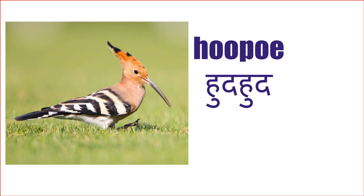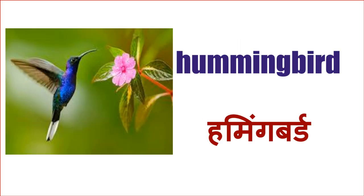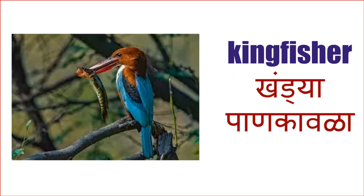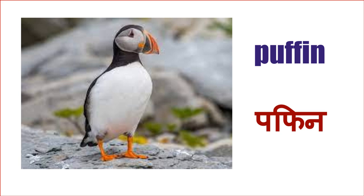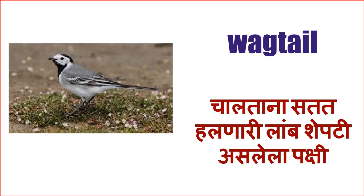Hoopoe - Yala Maratit hudhudhud mhantat. Yatcha chitra pahil ever haa kutla pakshi ahe tumcha lakshat eil. Egret - haa baggdya cha zaati itlai ek pakshi ahe, baggdya sarkas dhishnara. Hummingbird - yala mhantat hummingbird. Kingfisher - Khandi, khiwa yala pahankawla asahi mhantat. Puffin - haa kahi thikani samudra kinari aadhaar to. Emu. Wagtail - satat sotachi shepti haalau naara haa eek pakshi ahe. Wag manje shepti haalau nae aani tail manje shepti - Wagtail.